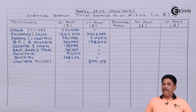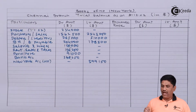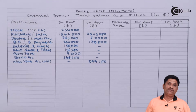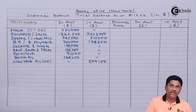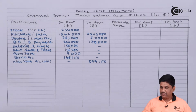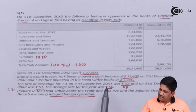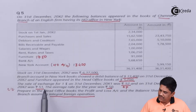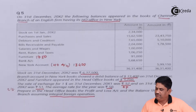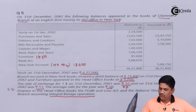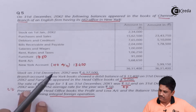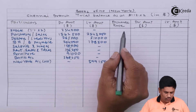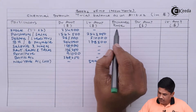I have copied the trial balance of the branch as it is. Now I need to decide what exchange rate to apply. Opening stock — we know that the opening rate is applicable, which is 52. Closing rate is 51 and average rate is 50. We have to be careful about which rate to use for each item.